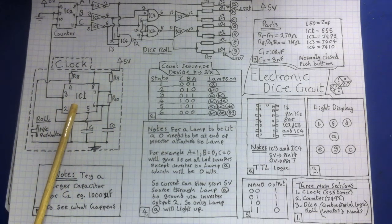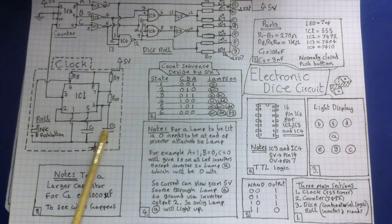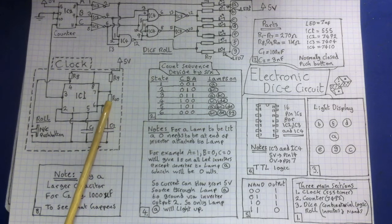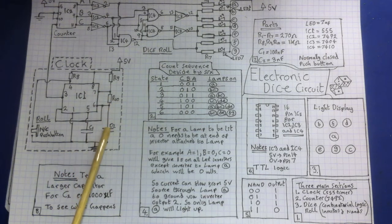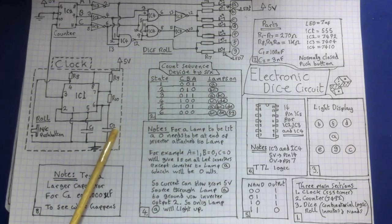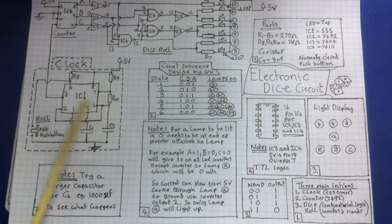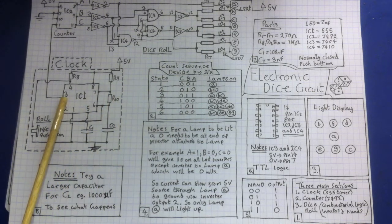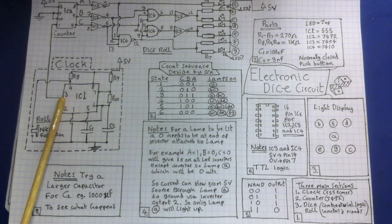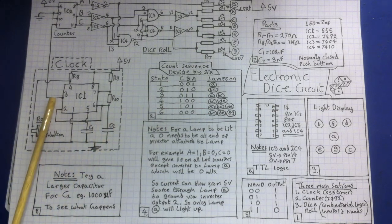First of all there's the clock. Now the clock is a 555 timer, we've gone through this before. The capacitor here will charge up and then it will discharge and charging and discharging is an oscillation. So the smaller you have this capacitor, the faster that oscillator is going to be. The number 3 pin on the 555 is the output pin and every time that discharges it's going to go low and when it charges it's going to go high.